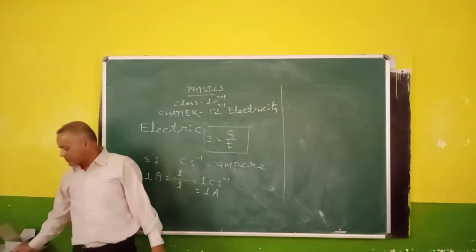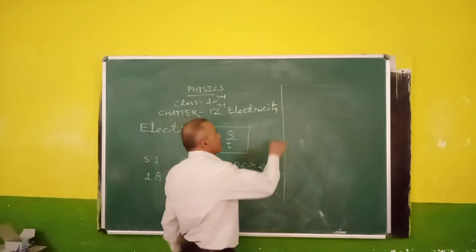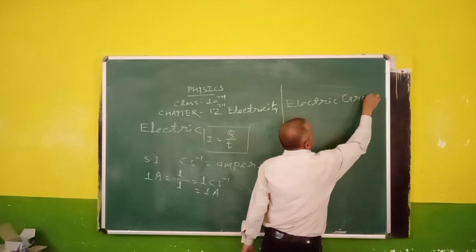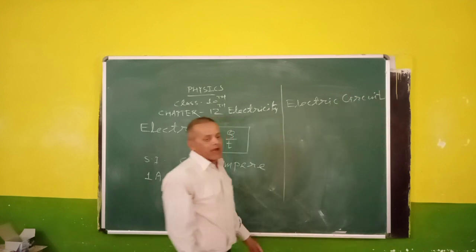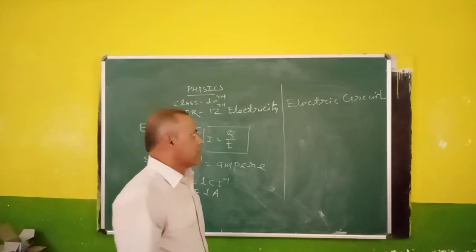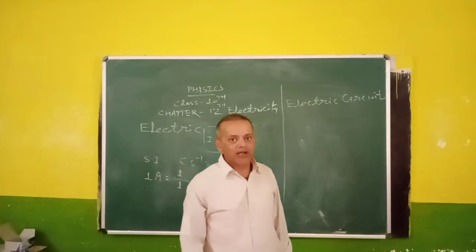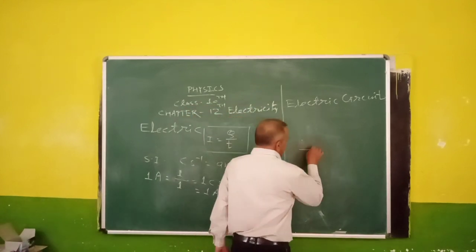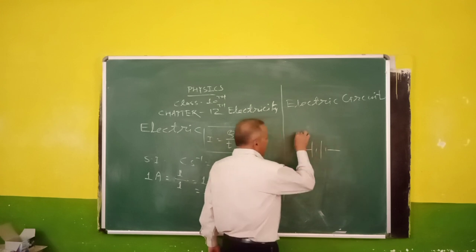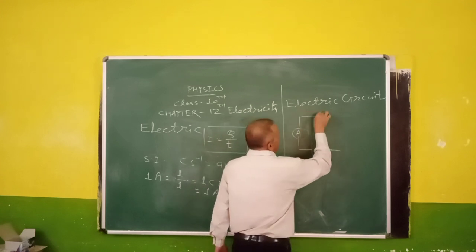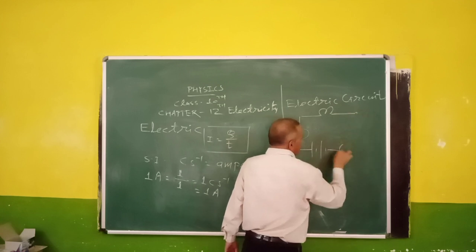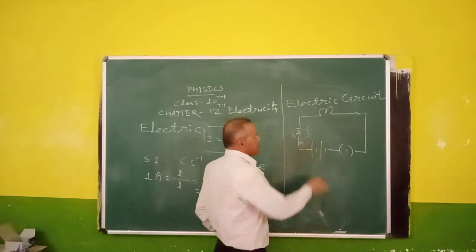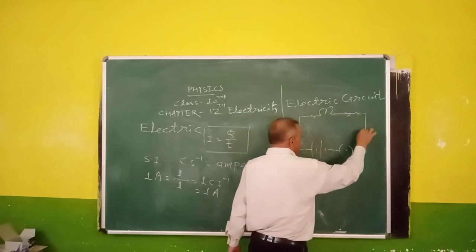Now, the second topic in this chapter is electric circuit. An electric circuit is the path followed by the electric current. The path followed by the electric current is represented by an electric circuit. I am going to draw a simple electric circuit having a battery, one ampere, and a switch. As we turn on the switch, the electric current will follow the path defined by the metal wire. So this loop is an electric circuit.